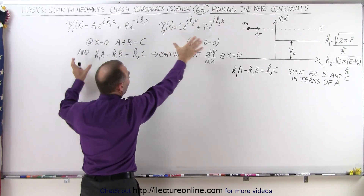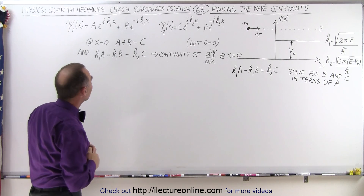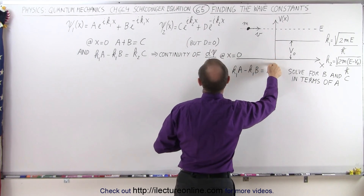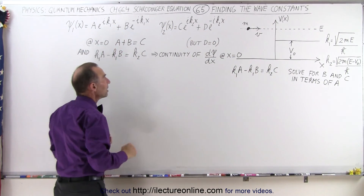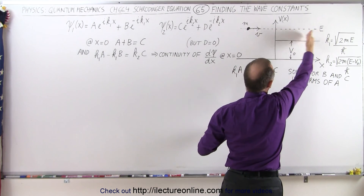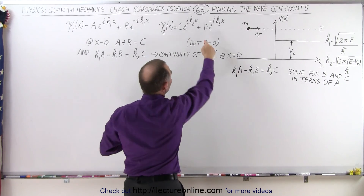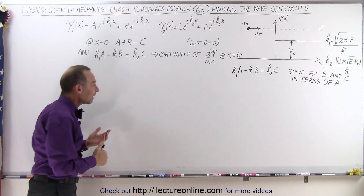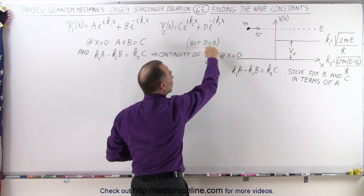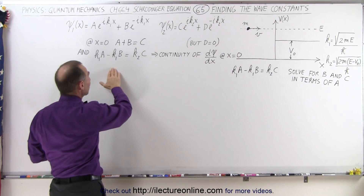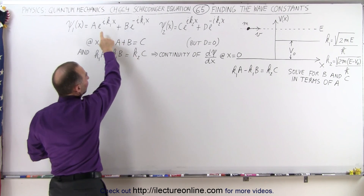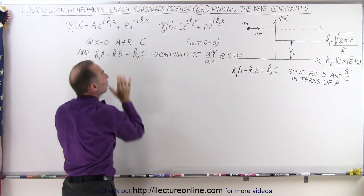Here are the two equations that we found to describe the wave function on both sides of the boundary at x equals zero. If we plug in x equals zero, we get that a plus b must equal c. We set d equal to zero because once the particles go past the initial part of the barrier, none of them return in region two — so there are no particles moving to the left, and therefore d equals zero. Secondly, taking the derivative of both functions and applying continuity at x equals zero means the slope on the left must equal the slope on the right, which gives us k1a minus k1b equals k2c.